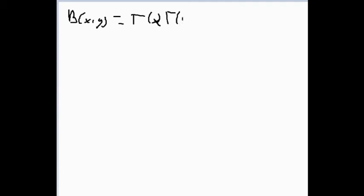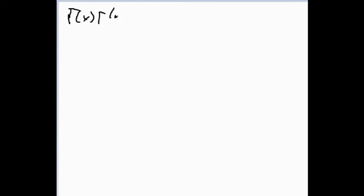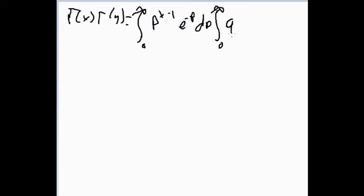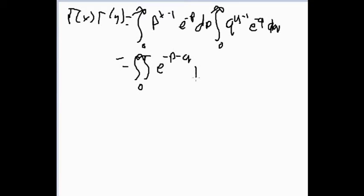Now we're going to show that B(x,y) = Γ(x)Γ(y)/Γ(x+y). We'll prove this by showing Γ(x)·Γ(y) = B(x,y)·Γ(x+y). We write Γ(x)·Γ(y) using their integral definitions, using p and q as integration variables: ∫₀^∞ p^(x-1)·e^(-p) dp times ∫₀^∞ q^(y-1)·e^(-q) dq. Combining into a double integral gives ∬ e^(-p-q) · p^(x-1) · q^(y-1) dp dq.